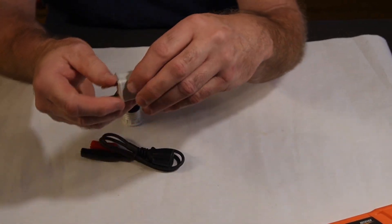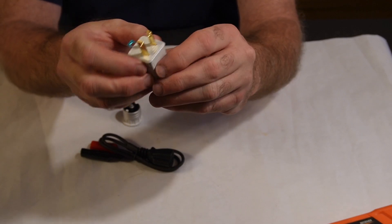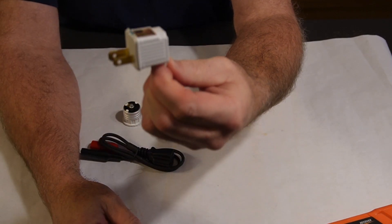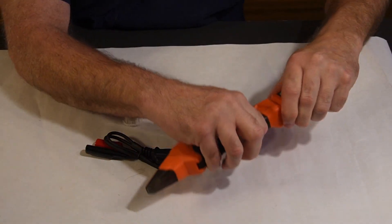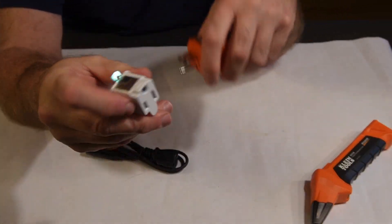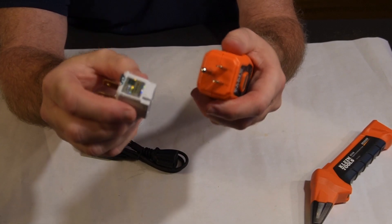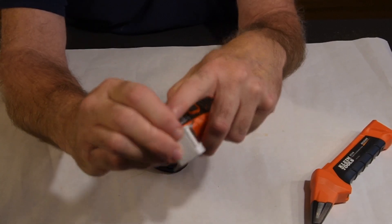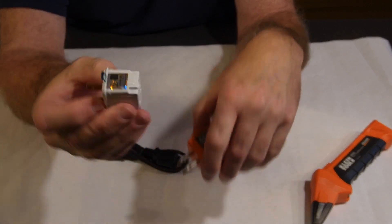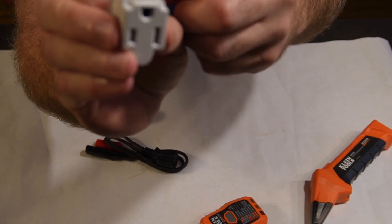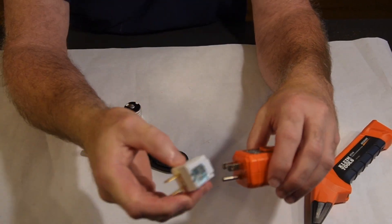So what we have in here, first of all, is this adapter which allows you to use the three prong tester on a two prong outlet. You have the adapter and then the grounding tab on there to ground it to the device.